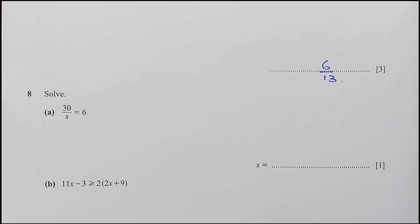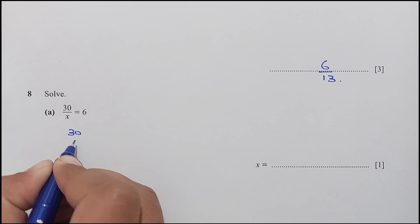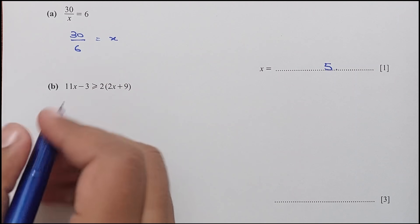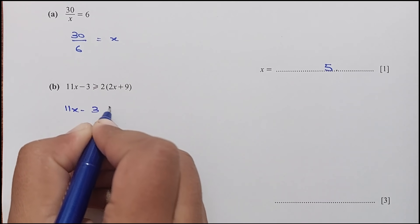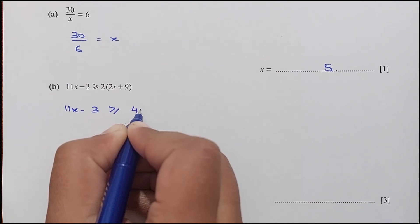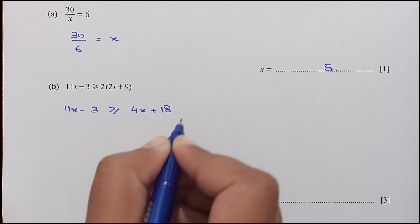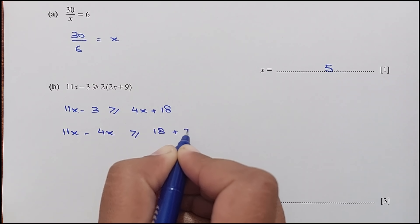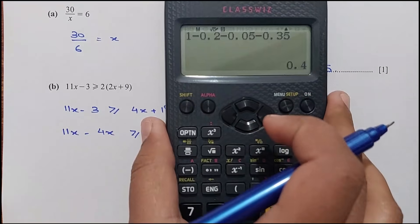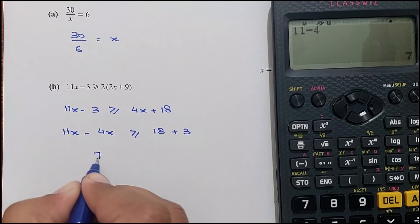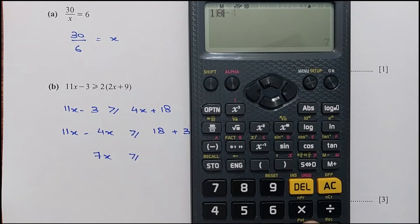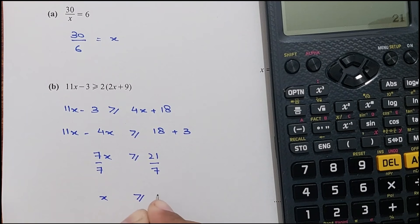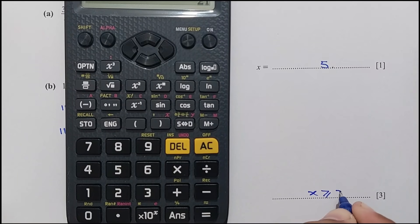Question number 8, part A: solving by cross multiplication gives x equals 30 over 6, so x equals 5. For part B: 11x minus 3 is greater than or equal to 2(2x + 9), which expands to 4x plus 18. Combining x terms: 7x is greater than or equal to 21. Dividing by 7, x is greater than or equal to 3.